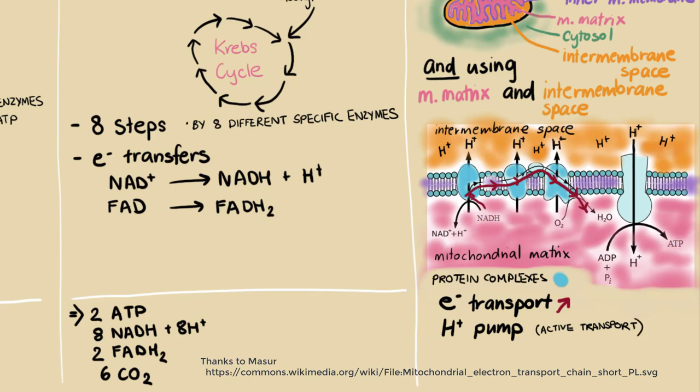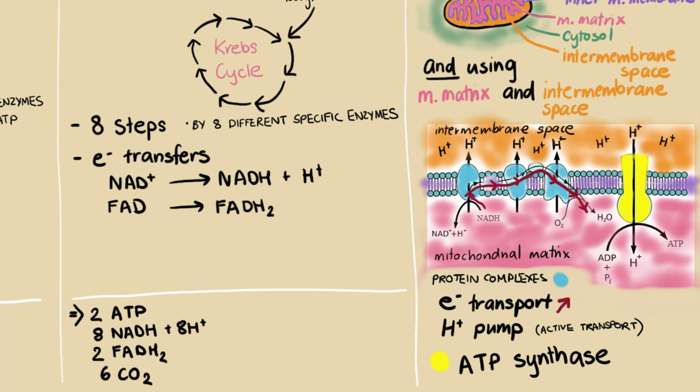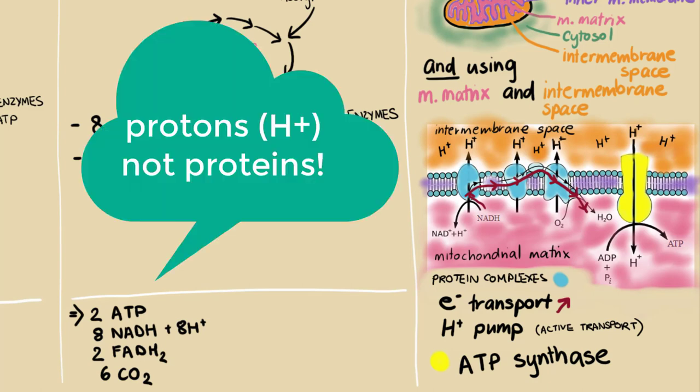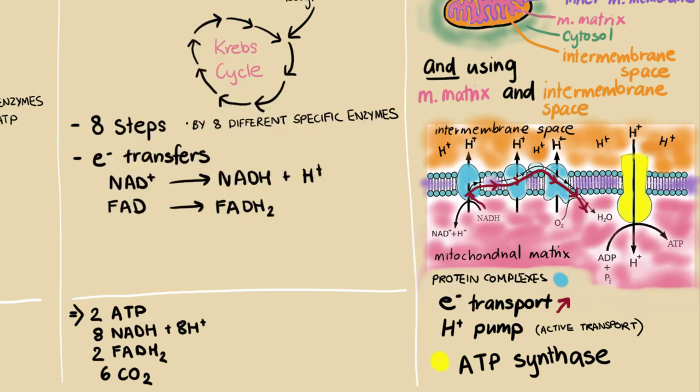Now this last protein is another enzyme called ATP synthase. I wonder if you can guess what it does. ATP synthase is another membrane-embedded protein enzyme that allows the protons to come back through to where they want to be, because of that gradient, into the mitochondrial matrix. ATP synthase couples that movement because that's releasing energy. As they come back in, it uses that energy to combine ADP, adenosine diphosphate, with a phosphate to create ATP.